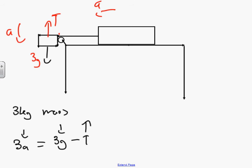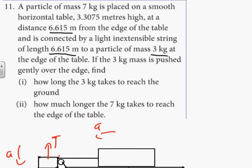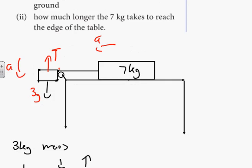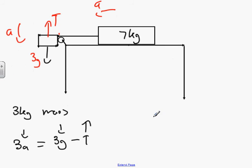What about the other one? 7kg. Is it a rough surface or smooth surface? Smooth, so no friction. For the 7kg mass, 7a going to the left equals tension pulling to the left, and minus nothing because there's no friction this time.